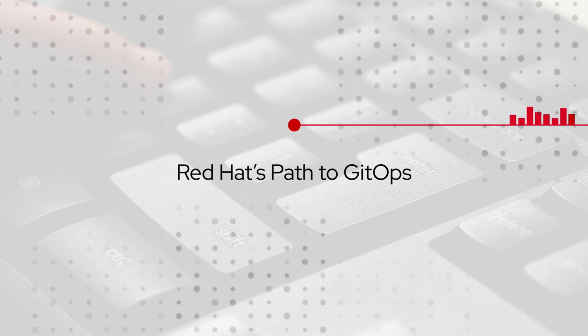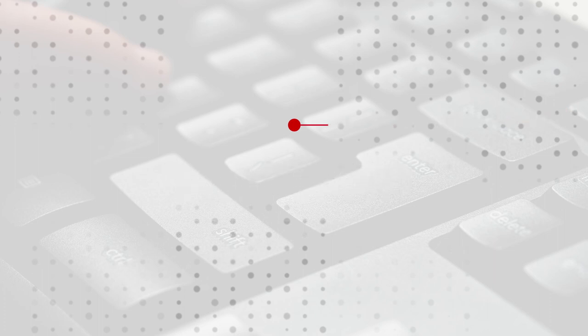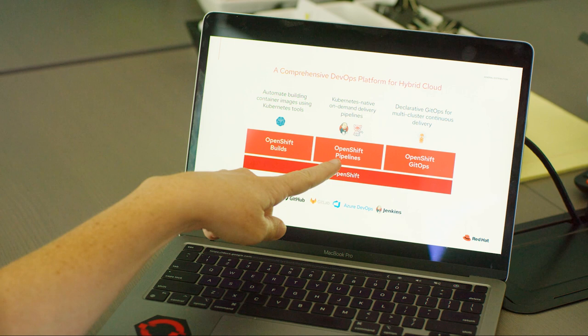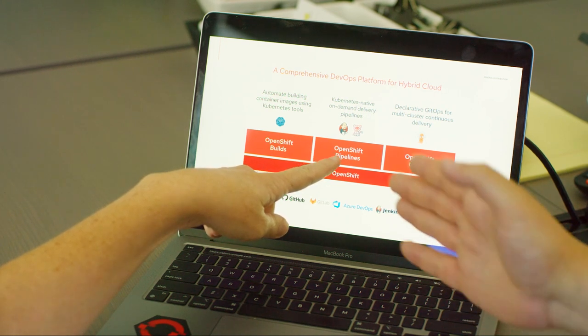Five years later we've got some great tool sets that support that culture, and one of the newer ones is GitOps. GitOps is the practice of using your Git repositories — where your developers are submitting their code — as a single source of truth, and then integrating that with your CI/CD continuous integration and continuous deployment pipelines so that you can more automatically